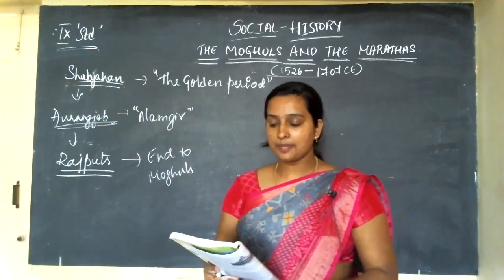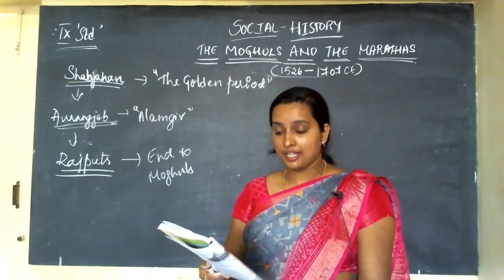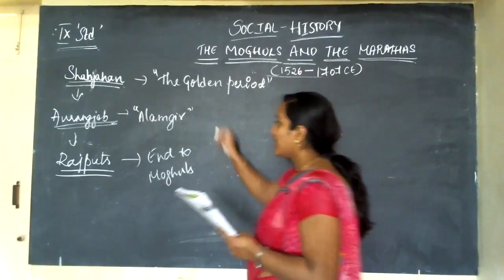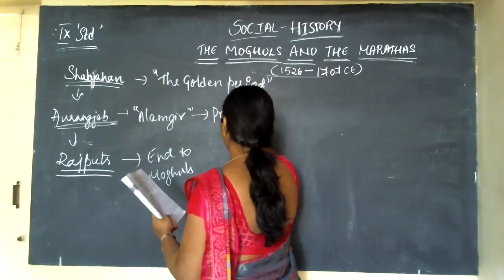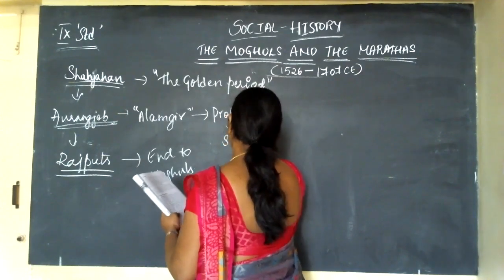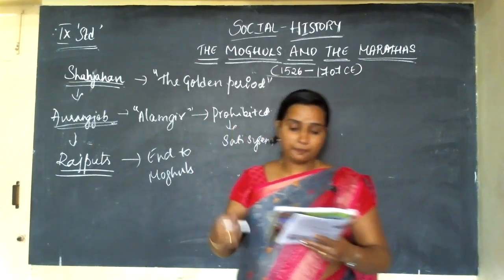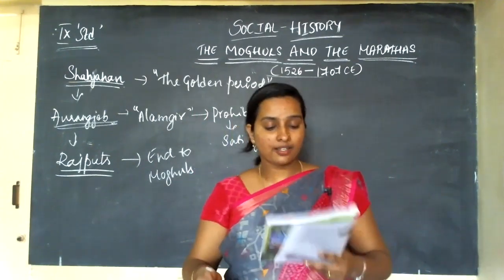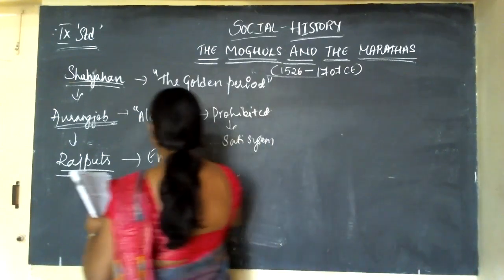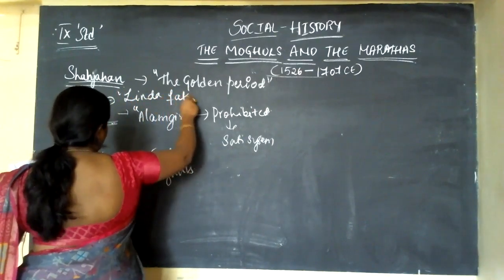Aurangzeb attempted to implement the philosophies advocated strictly in the Quran. Many popular Hindu temples were destroyed during his reign. He prohibited the sati system, which was something positive about Aurangzeb. He also discouraged musical performances, processions, gambling, and consumption of liquor and cannabis. He led a very simple life and was called Zinda Pir, meaning a living fakir.